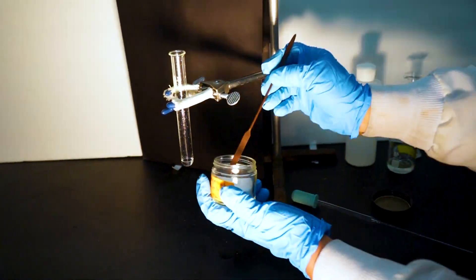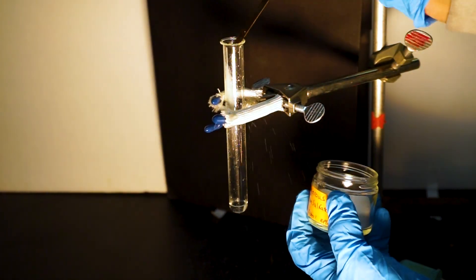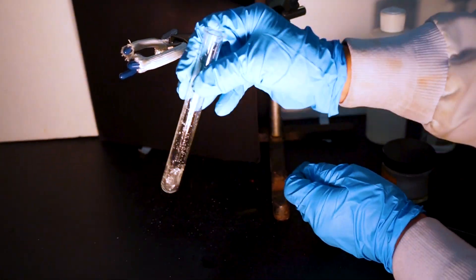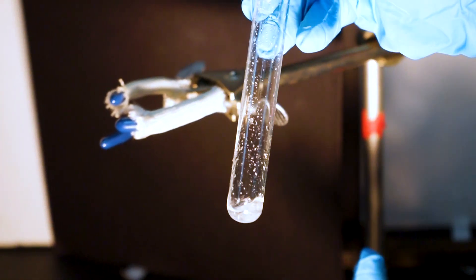Next, add a small portion of anhydrous sodium sulfate. Gently stir the test tube to completely dry the product. If needed, add another small portion.